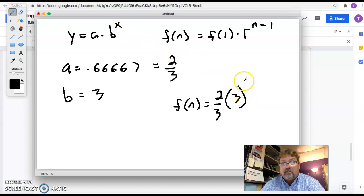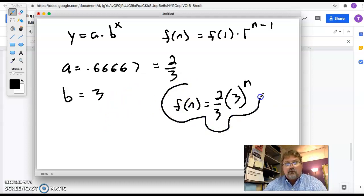Our f(n) would be equal to 2 thirds times 3. Now they're saying to the x, so we'd have to put an n here. Don't put that n minus 1. So what we really want to do is test this and see does that give us our sequence. If it gives me the sequence, it's fine to use, right? This is the formula it gave us. Now like I said, you want to test it to see if it works.